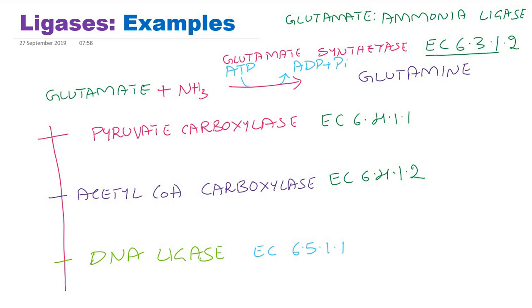If the cofactor is different in DNA ligase, the EC number will change. If it is ATP, it is EC 6.5.1.1. The new bond formed in the reaction catalyzed by pyruvate carboxylase is carbon-carbon, and even in acetyl-CoA carboxylase it is carbon-carbon because they have the same second digit number. In DNA ligase, the second digit number is 5, so the new bond formed is carbon-phosphoric acid.